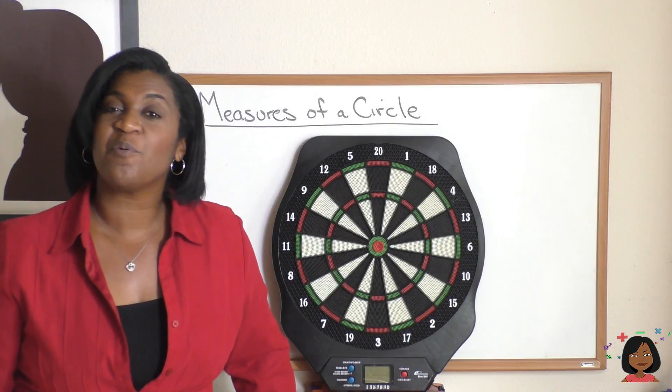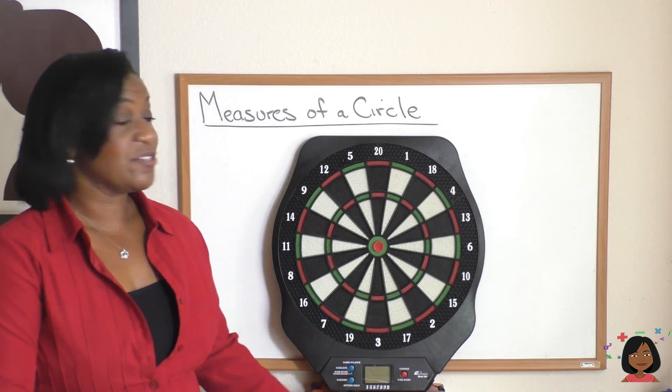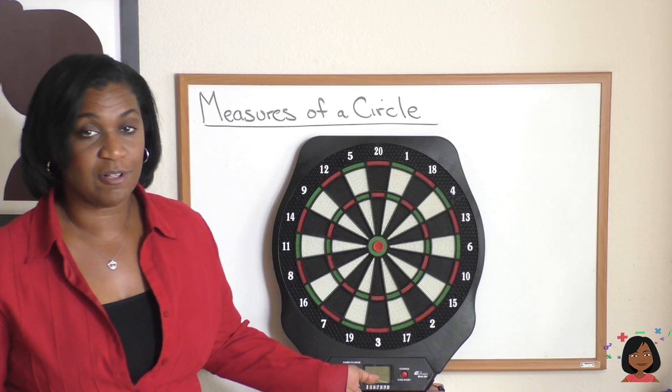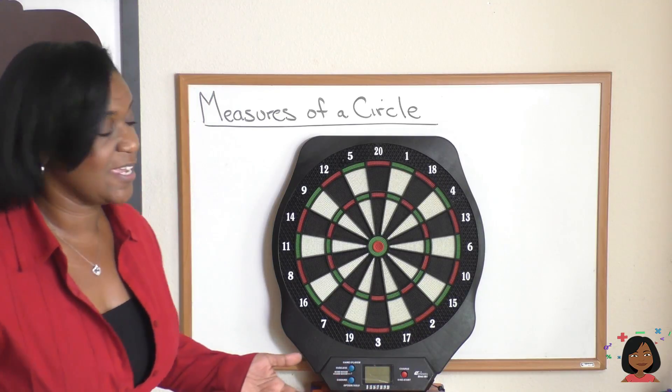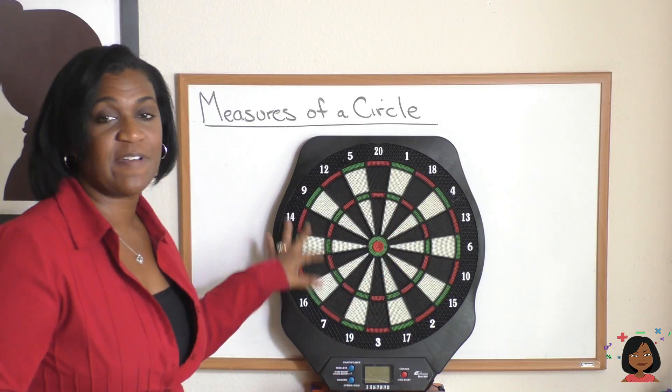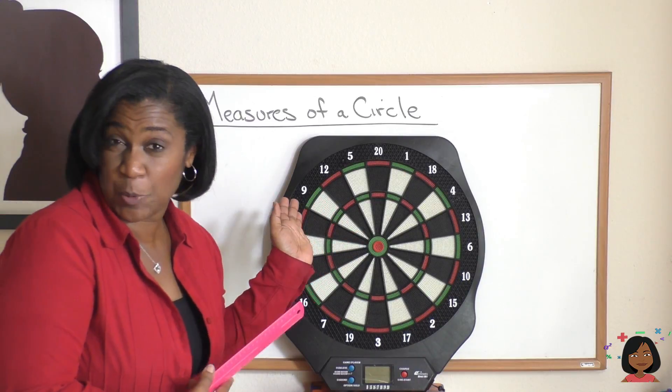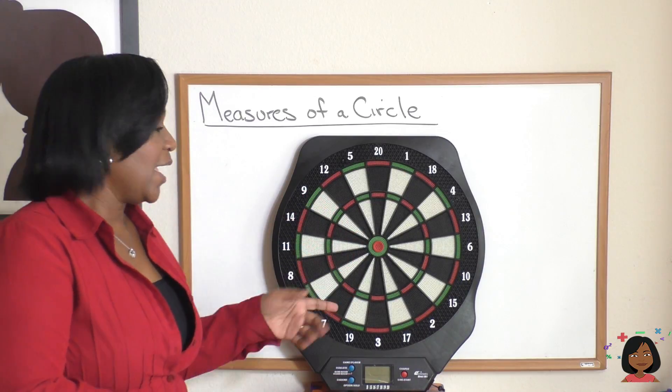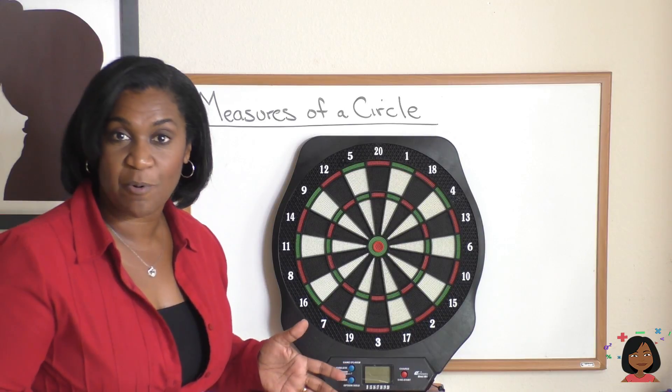I'd like to show you one more thing regarding circles and the measures of a circle. So we talked about radius and diameter. So I want you to see that I have most of my dartboard from in my garage, but I have a dartboard here. And do you see any circles on this dartboard?